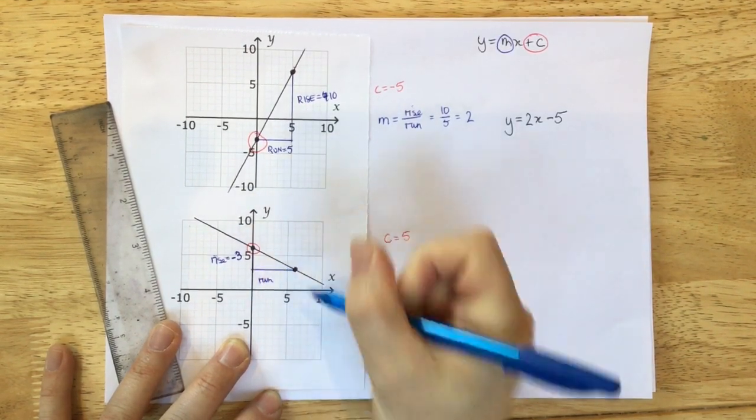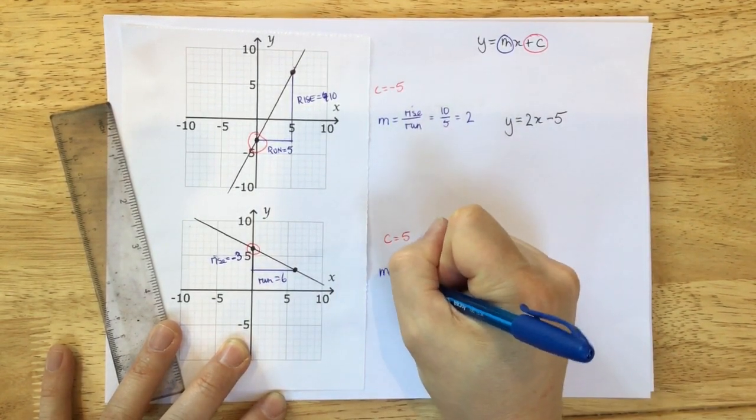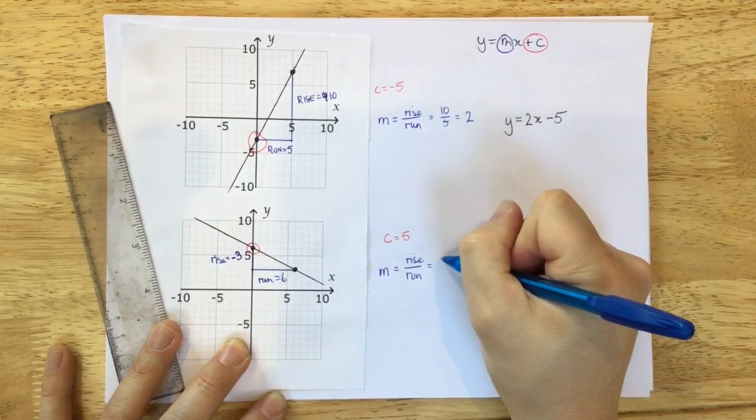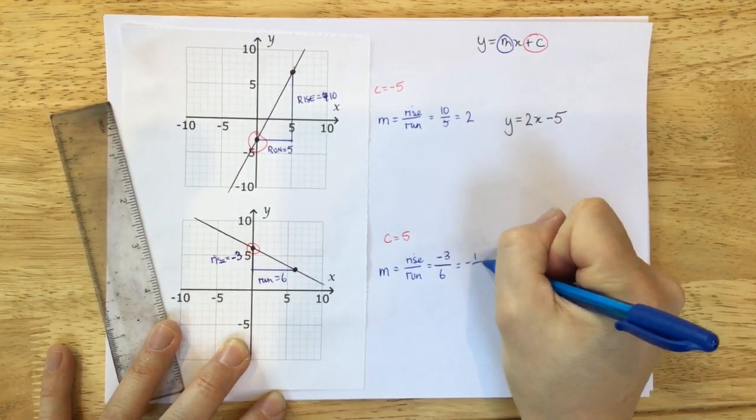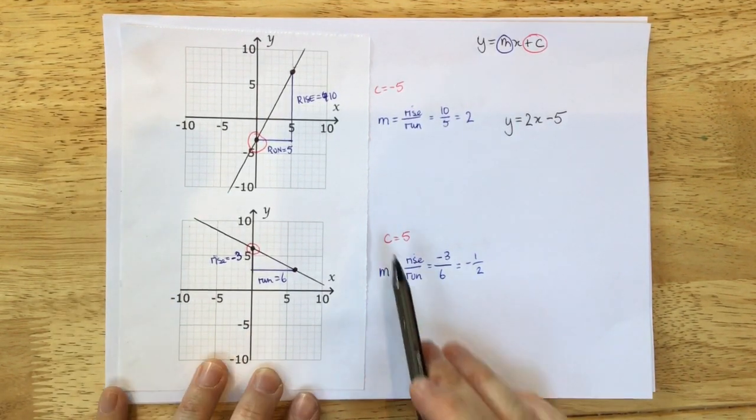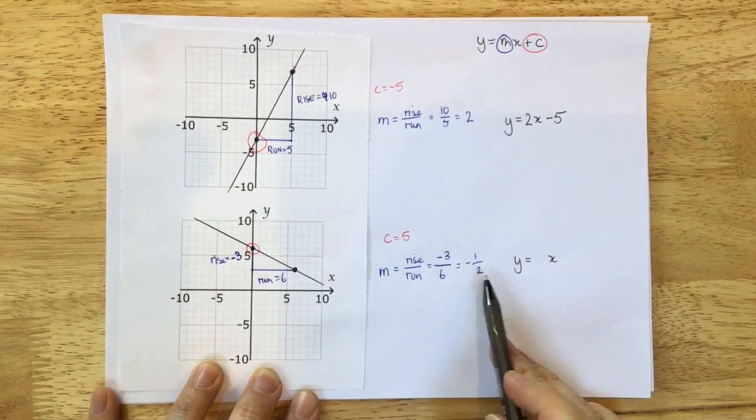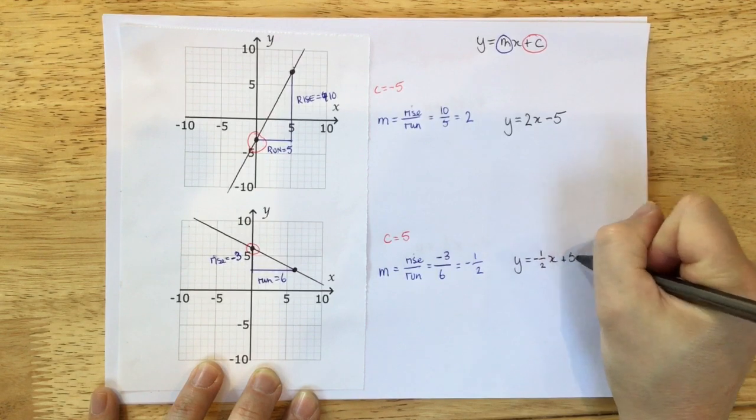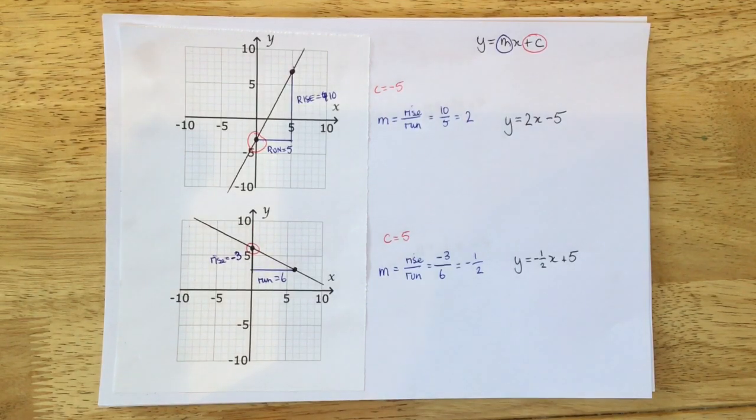So my rise is minus 3. My run, that's going across 2, 4, 6. So it goes across 6. And so the gradient is the rise over the run. How far up and down it goes, minus 3, over how far across it goes, over 6. Minus 3 sixths is the same as minus 1 half. Now again, we know the gradient and we know the y-intercept. So y equals so many x plus c. Well, m here is minus 1 half, so y equals minus 1 half x. Our value of c is 5, it's positive 5, so it's plus 5.